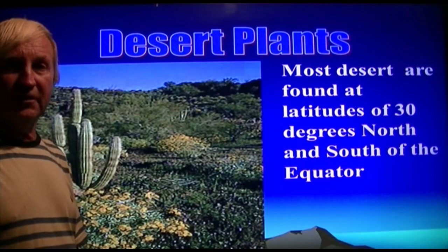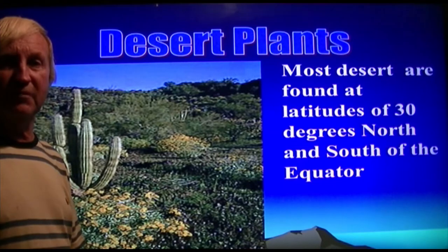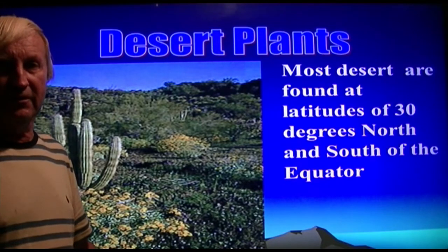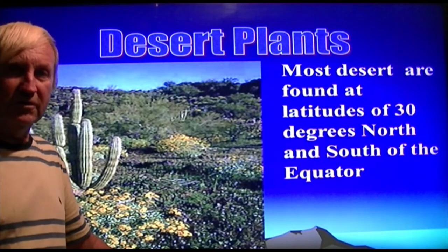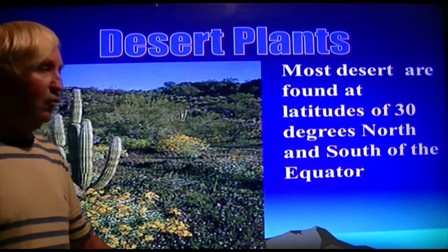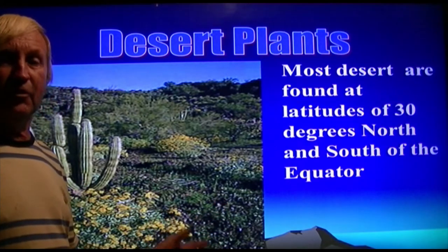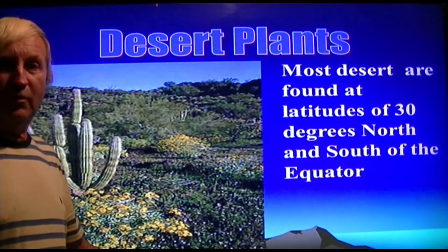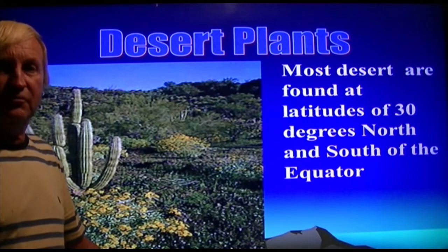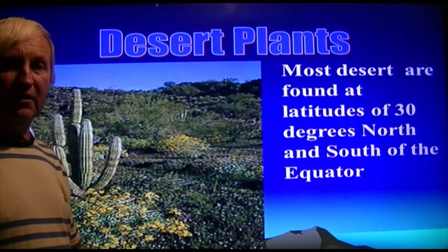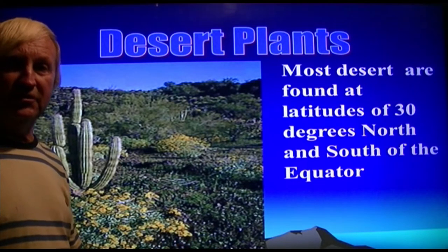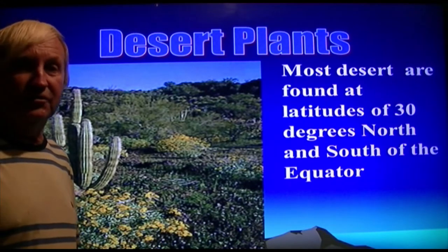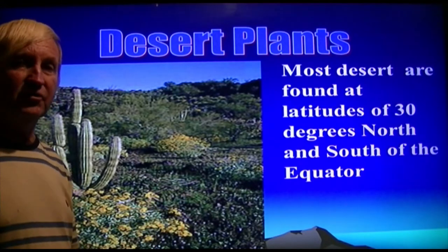I want you to know the distinction between a rain shadow desert and a natural desert. A natural desert occurs at 30 degrees north and south latitude. Rain shadow deserts are different — precipitation that would normally reach that area is blocked by very tall mountain ranges. The Sierra Nevada mountains block snowfall and precipitation from reaching Nevada and Utah, creating a rain shadow desert. Central Nevada is a desert because of mountain ranges — it's a little too high in latitude to be a true desert.